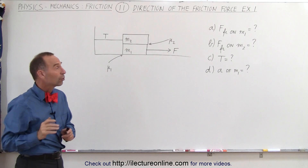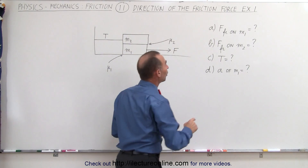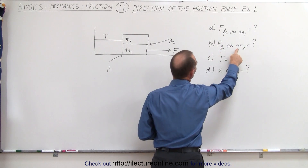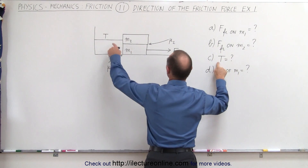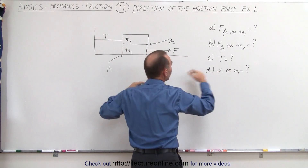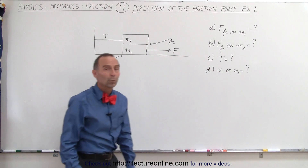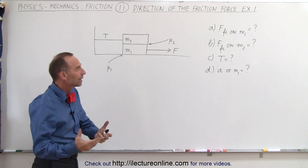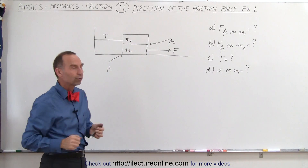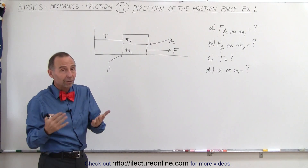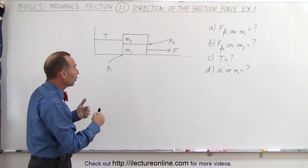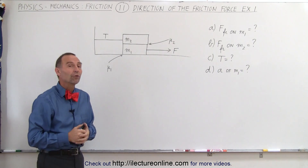What we're trying to determine here is: first, all the friction forces on M1, all the friction forces on M2, the tension on the rope, and the acceleration of M1 due to all the forces acting on it. We're not actually going to numerically calculate them, but simply come up with the equations determining those four items. That's the hard part — knowing what the friction forces are and what directions they act.